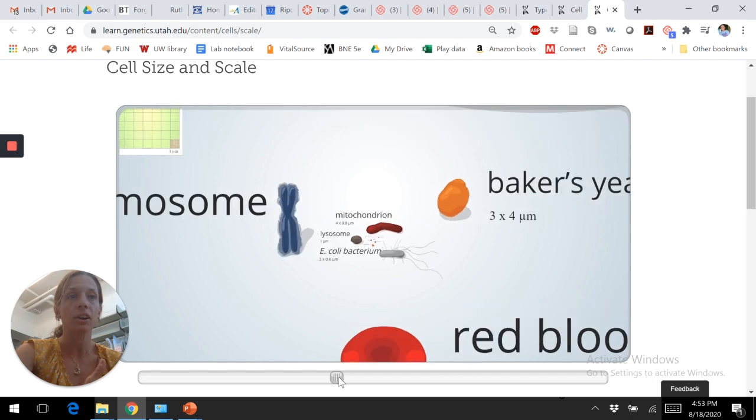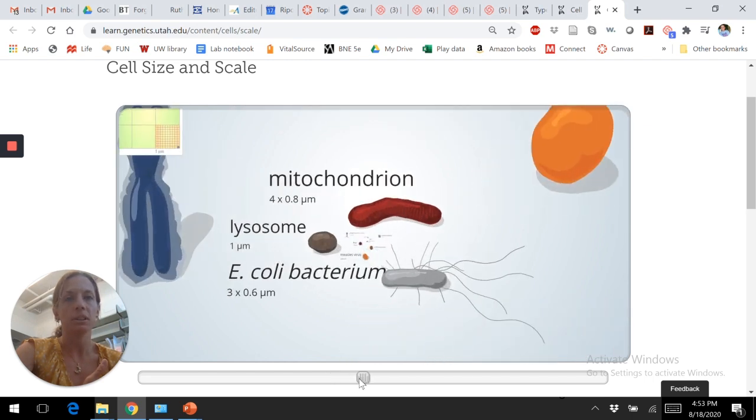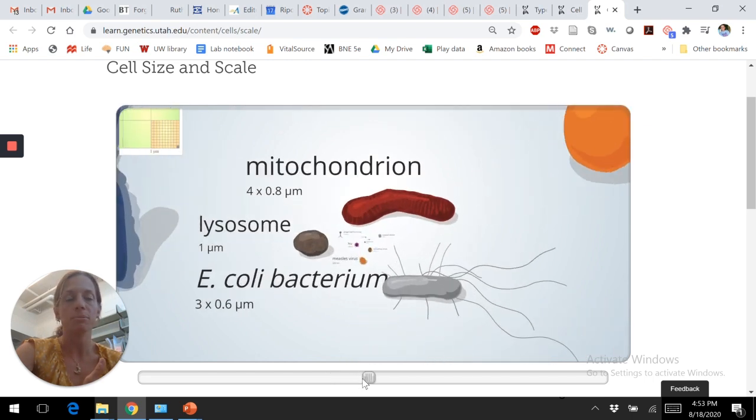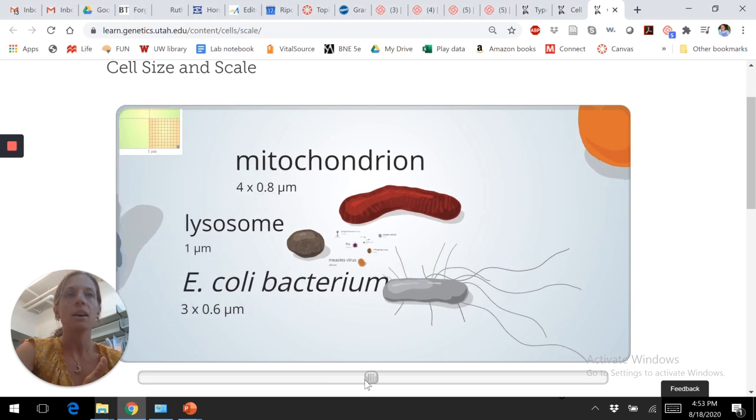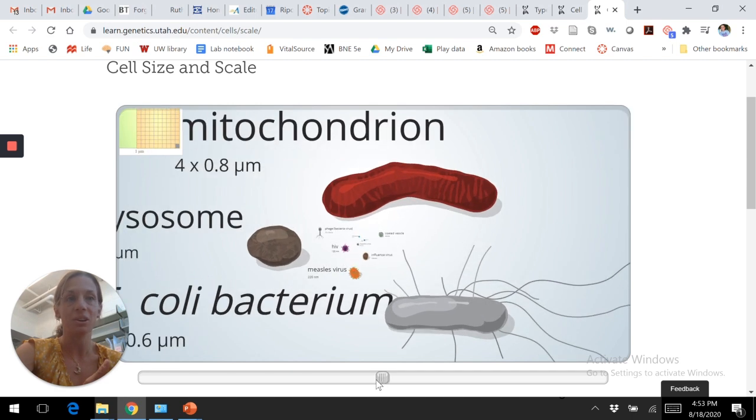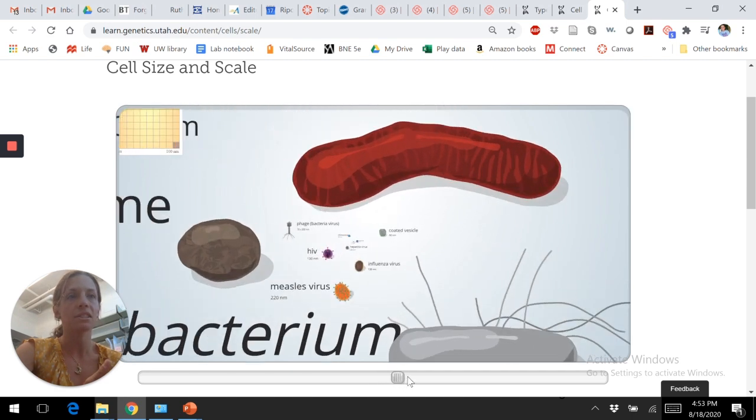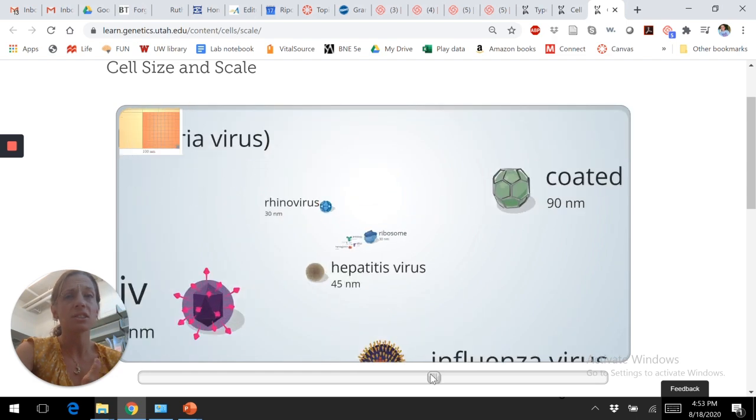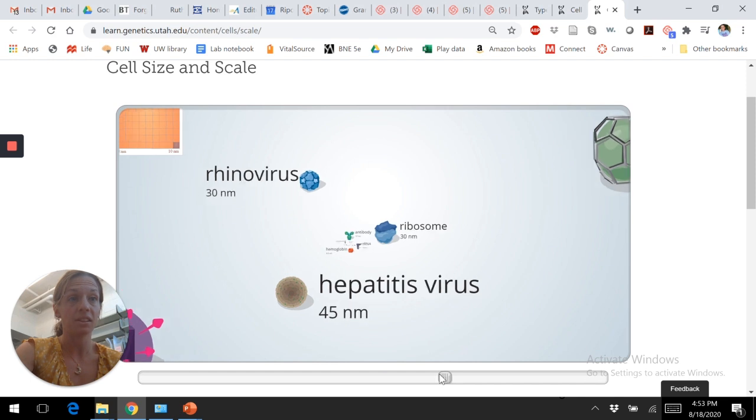As we get past here, these are things you can't see with a light microscope. We won't be seeing anything smaller than this in our class. But here's a mitochondria. You can see it's about the same size as a bacteria, E. coli. And then we get into viruses. And just kind of, this is good for getting the idea of size and scale of things.